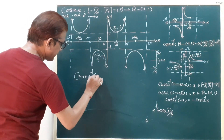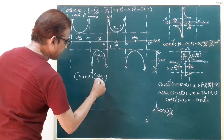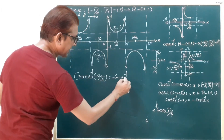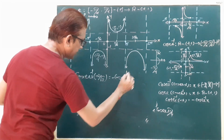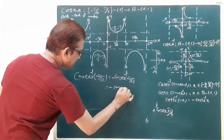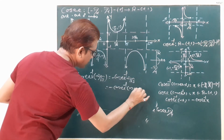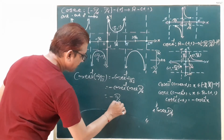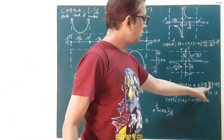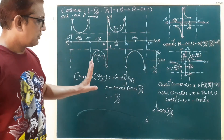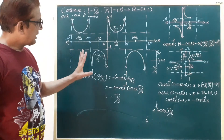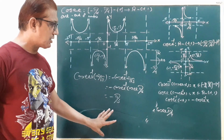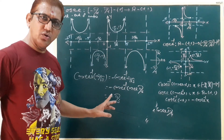Sixth: cosecant inverse of minus 2 by root 3. So minus cosecant inverse of 2 by root 3, giving minus cosecant inverse of cosecant pi by 3 — that is 60 degrees — so the answer is minus pi by 3, which belongs to the closed interval minus pi by 2 to pi by 2, minus {0}. So here we have completed all 6 trigonometric function graphs.